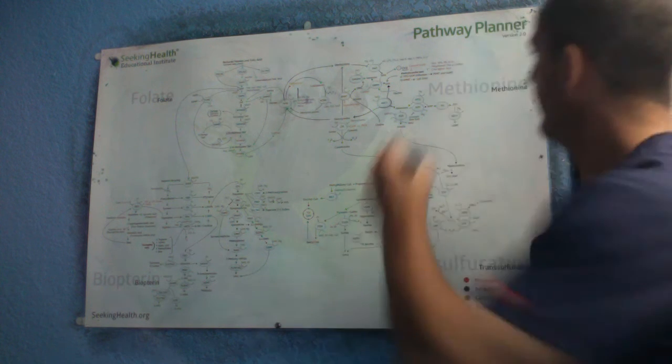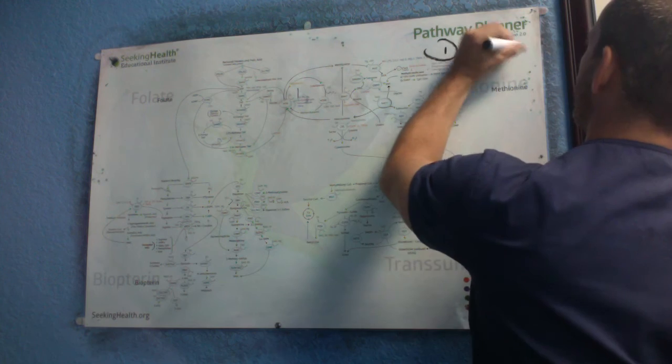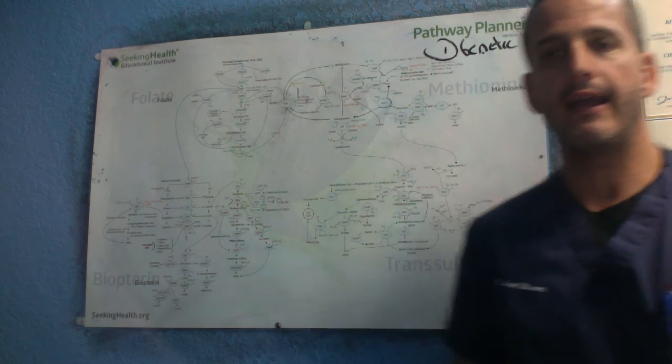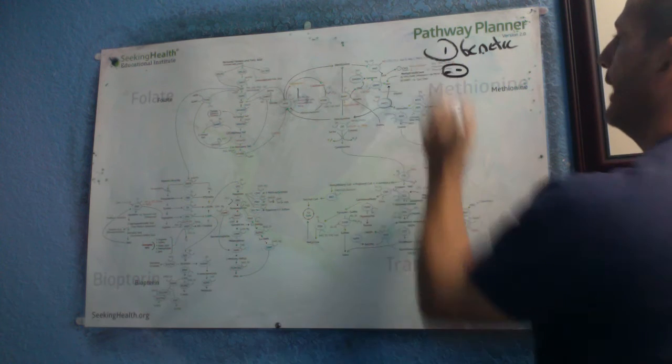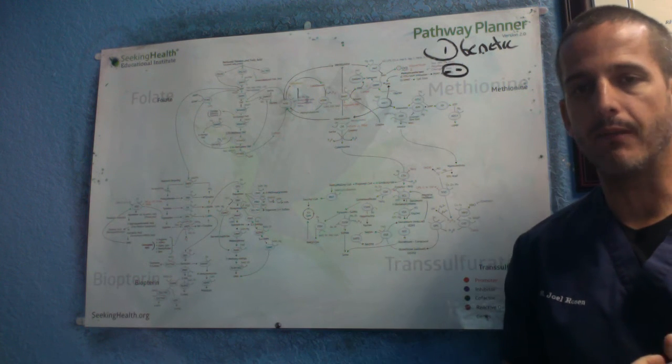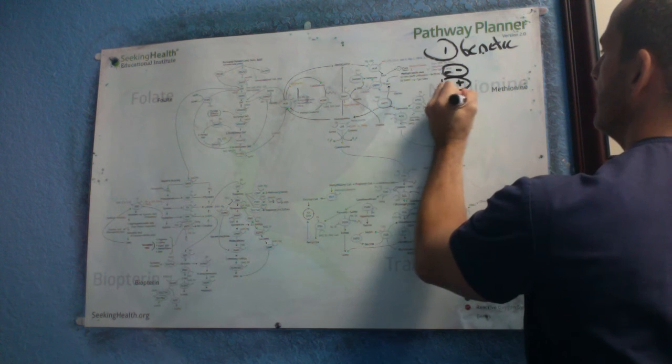The first thing that we learn about is genetic information. That's the first thing, is we understand how our genes are working. There's three possible answers that you can get. You can get a minus minus, you can get a minus plus, and you can get a plus plus.